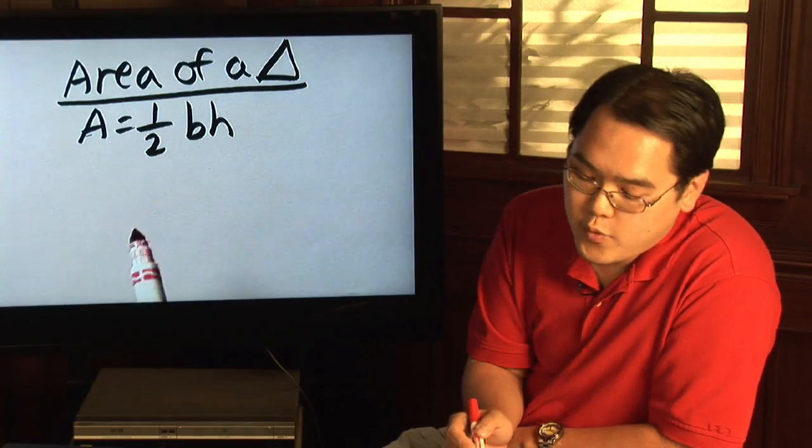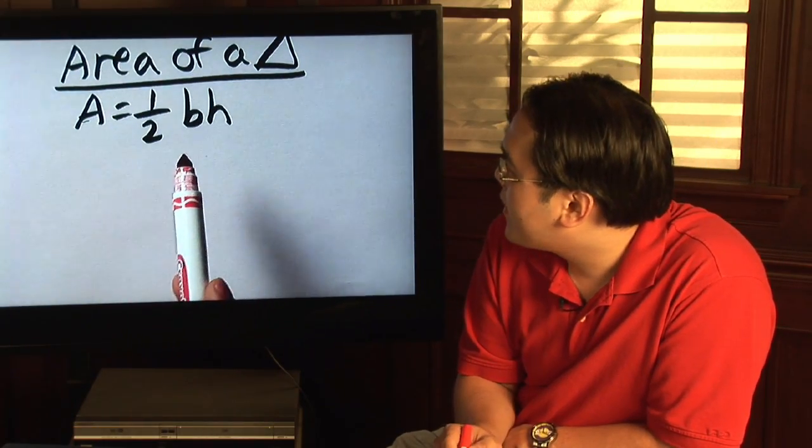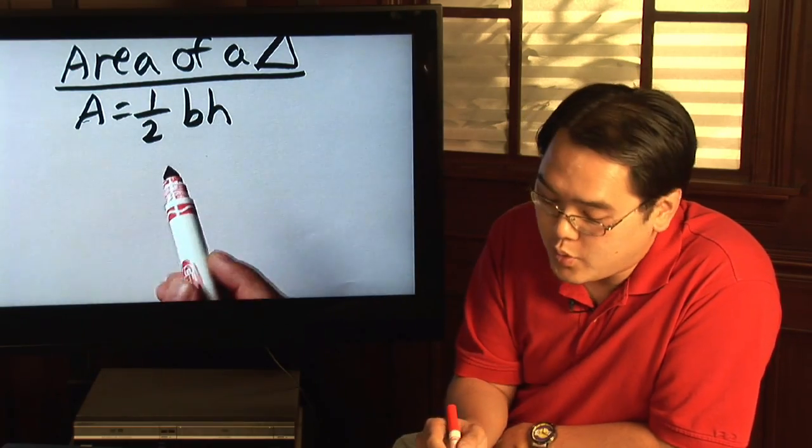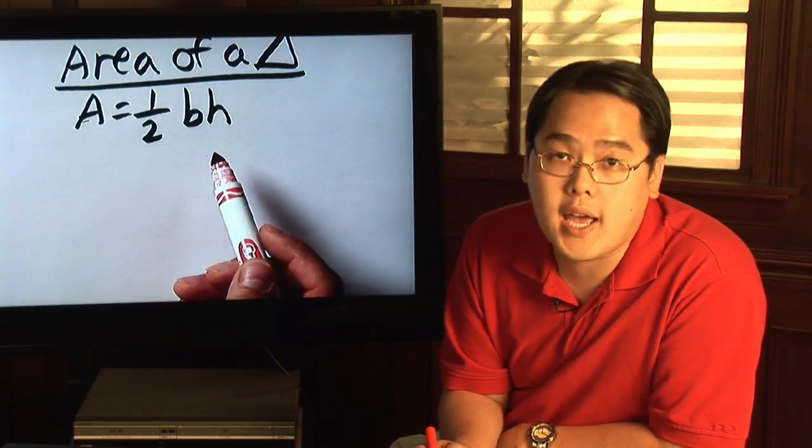Now here's the formula for the area of a triangle. It's A equals one half, B stands for base, H which is height. So in other words, area is one half the base times the height.